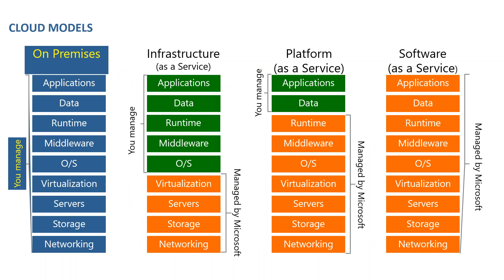Now we'll talk about cloud models. In on-premises, you have to manage everything end-to-end — networking, storage, software, virtualization, OS, application, data, runtime, and middleware. If anything goes wrong, the IT person has to run across all the time, find the issue, analyze it, do an RCA. When you move to Infrastructure as a Service, you only have to manage the application, data, runtime, middleware, and OS.